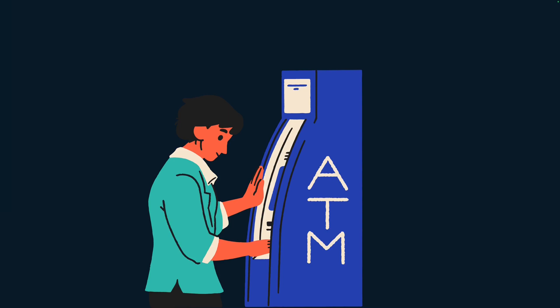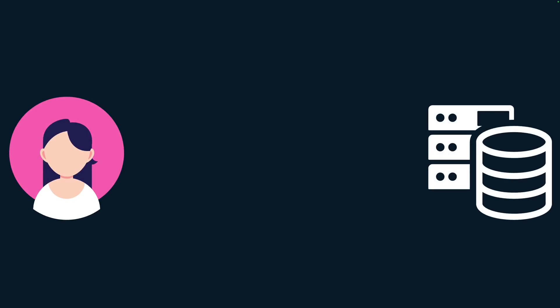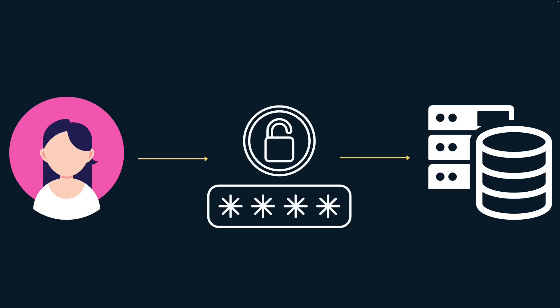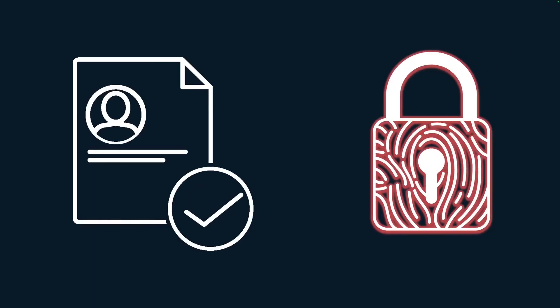For any software, consider you want to access something from a server. You have to let the server know who you are — are you the person who should really be granted access? Usually you provide a user ID and password. The identity is matched at the back-end server, and if found, you are granted access. Otherwise you are denied access. This methodology of providing user ID and password to let the service know who you are is called authentication.